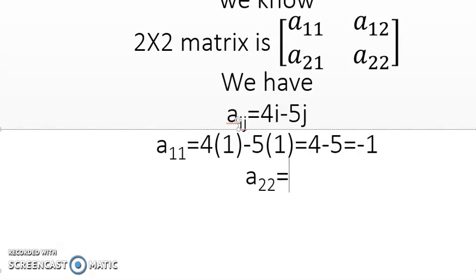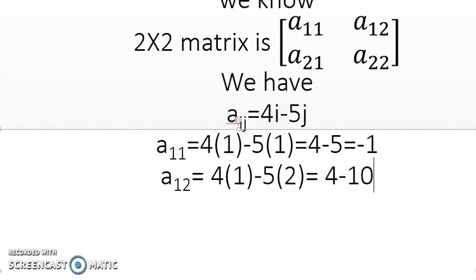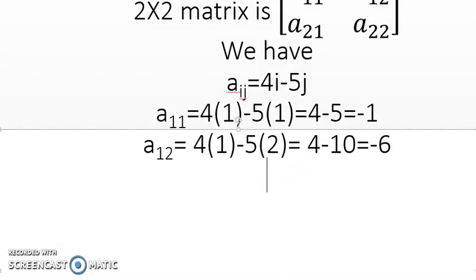And then after A_12. So let me find 1, 2. 4 times - i means here 1 - minus 5 times - j means here 2. So 4 times 1 is 4 minus 5 times 2 is 10, which means minus 6.